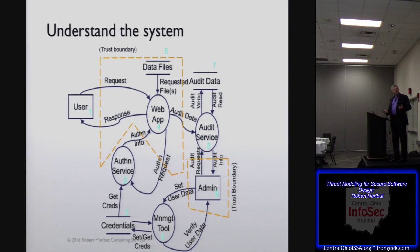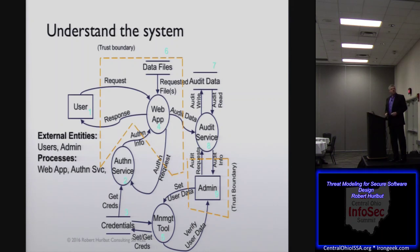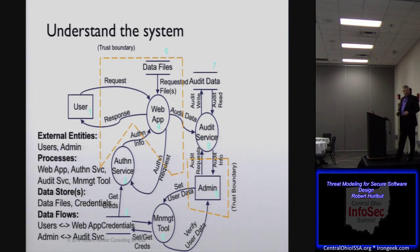Trust boundaries simply mean that you're going from one state to another of trust — a user may be unauthenticated and now they're authenticated. Once that has happened, what happens inside that perimeter? Along with that, you would identify what are my entities, what are my services that are running, what happens with the data as I store it, what are the flows? These are things you want to think of as you're looking at your system and understanding it.